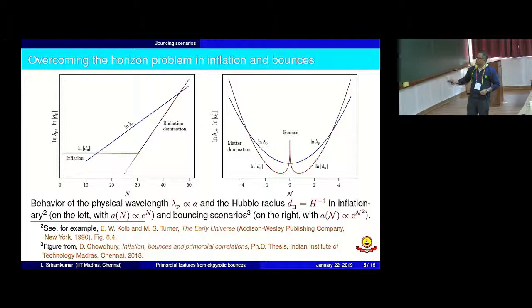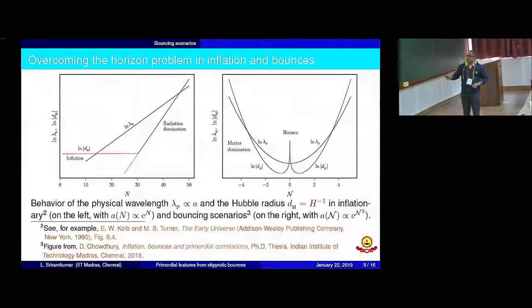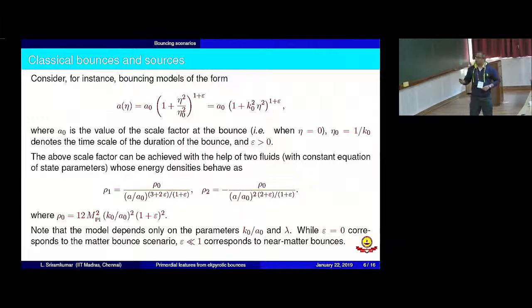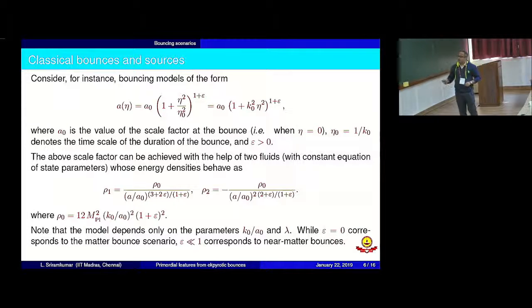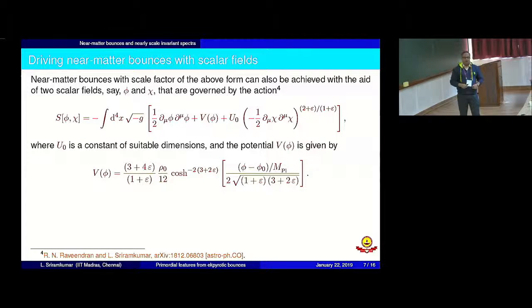How do you achieve bounces of this type? The bounce has been modeled in terms of the conformal time eta. Such a bounce can be achieved with the help of two fluids — one which behaves like matter when epsilon equals zero, and another which behaves like radiation, but you require the energy density to be negative to achieve such bounces. You can model this with the help of two scalar fields: one canonical scalar field to achieve the matter contraction, and another which has negative energy density — a ghost field. The scale factor can be completely modeled in terms of these two fields.